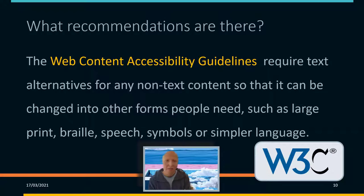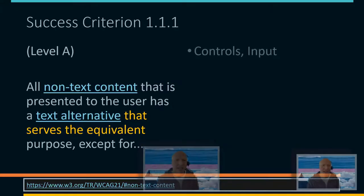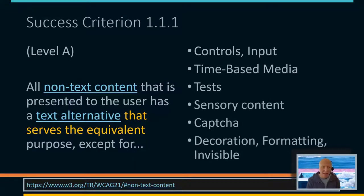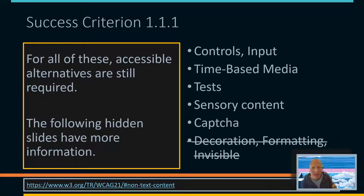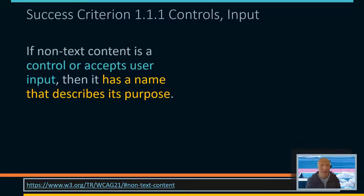In our last presentation we introduced web content accessibility guidelines. At the A level — one of the first criteria — all non-text content has to have a text alternative that serves the equivalent purpose, except for decoration, formatting, and invisible images. Those items still have to have an accessible alternative. For controls and inputs, the element has to have a name that describes its purpose.